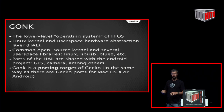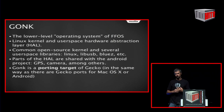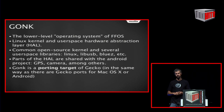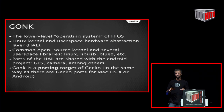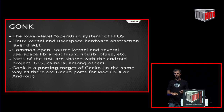GONK is the very lowest layer — all the hardware abstraction, a Linux kernel, mostly existing open source software. We're not writing a whole new kernel or abstraction layer; there's no need. GONK is the underlying OS targeted by Gecko. You can build Gecko for Mac OS, Windows, Android — which is what Fennec does — and now for GONK.